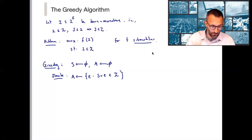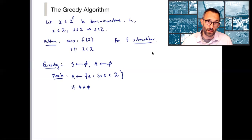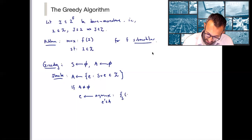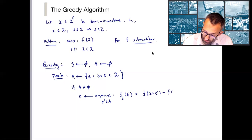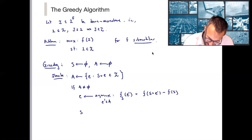If there are no more elements I could add and still be feasible, we stop. But if A is not the empty set, I look through all candidates and pick the element with the largest marginal value with respect to my current set S. In other words, I choose the element e that is the argmax over all elements of A of F_S(e'), which we defined as F(S ∪ {e'}) minus F(S). This is the element that boosts my value as much as possible. Then I add that element to S, and output S.